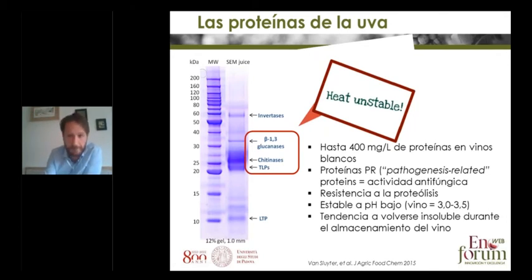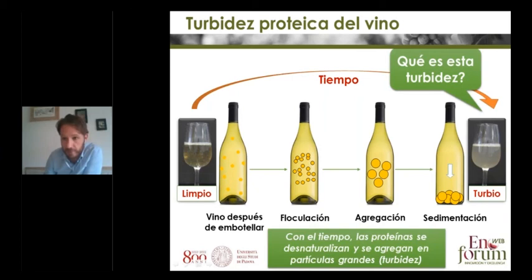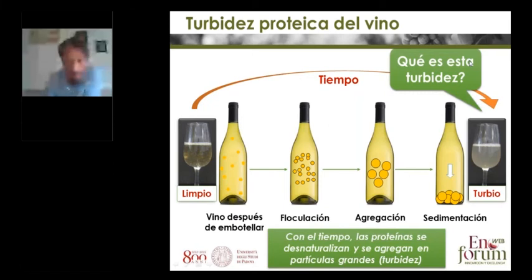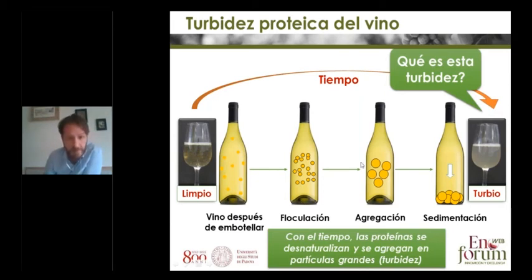The haze mechanism — the process of going from a limpid wine to a turbid one — is represented here. At the beginning, when the wine is bottled, if the proteins have not been removed, they are soluble. You see these yellow dots here — they represent soluble proteins. If over time the wine is stored in wrong conditions, maybe too hot or with fluctuating temperature, the proteins can lose their solubility, so they flocculate, stick together, aggregate, and eventually form a sediment. From this point onwards, the wine is seen as turbid.